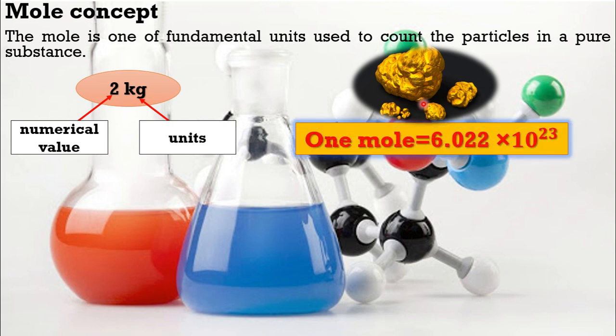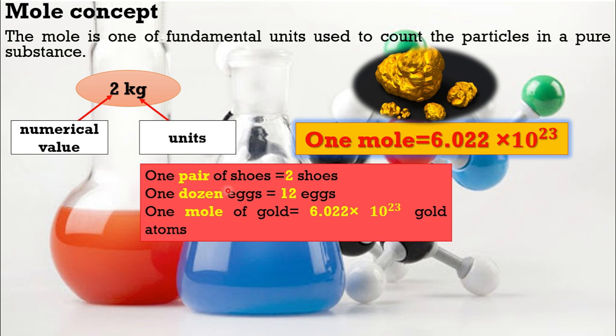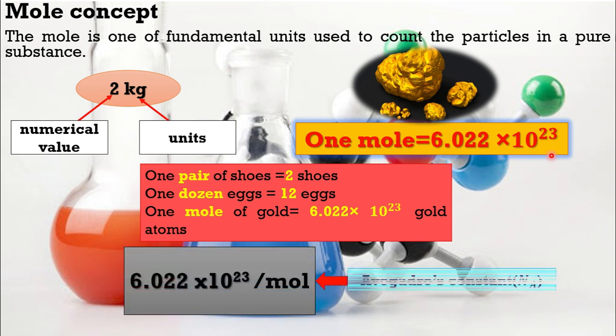One mole is equal to 6.022 times 10 to the power 23. Actually, the mole is also just a number, like pair, dozen, or gross. For example, one pair of shoes means two shoes. One dozen of eggs means 12 eggs. Likewise, one mole of gold means 6.022 times 10 to the power 23 of gold atoms. One mole of anything contains 6.022 times 10 to the power 23 of that thing, and this number is always constant. This number is also called Avogadro constant and denoted as Na.